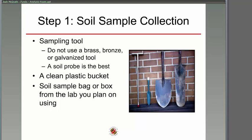Don't use brass, bronze, or galvanized tools. A soil probe is the best tool — typically made out of stainless steel, so it won't contribute anything to the sample. You also want to have a clean bucket — this may seem like a no-brainer, but it's not always the case.